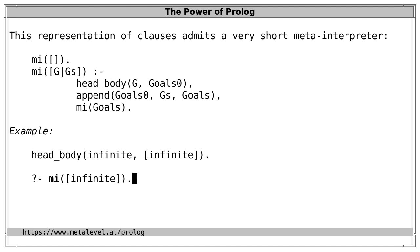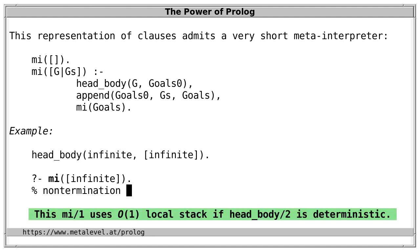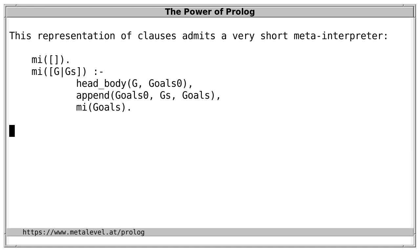With this simple change, the interpreter runs without terminating using bounded local stack — at least if head_body is deterministic, which it is in this case. That's because in this version, tail call optimization deallocates the stack frames on the local stack before the predicate is recursively invoked, so they don't pile up.